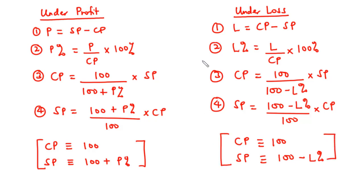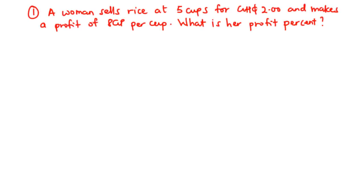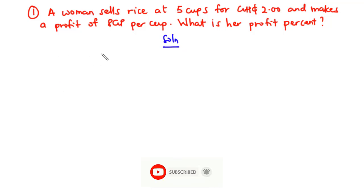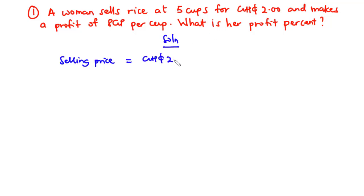Let's try some examples. Question one: A woman sells rice at 5 cups for 2 Ghana cedis and makes a profit of 8 Ghana pesewas per cup. What is her profit percent? From the question, the selling price of the five cups is 2 Ghana cedis.